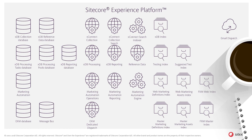The Marketing Automation Engine in Sitecore runs Marketing Automation Plans or campaigns, which are directed graphs that continuously process contacts and flow them through plans, creating an optimized and personalized experience for each contact.